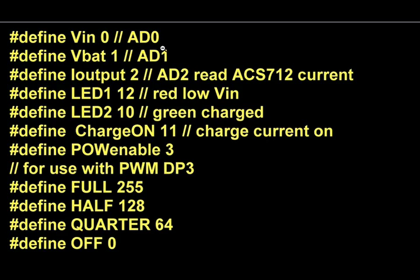VN is 0, that's analog to digital pin 0. VBAT is defined as 1, that goes to analog to digital 1. What I call Ioutput is defined as 2. That reads on analog to digital converter 2, it will read the ACS712 current sensor, which I'll show you how that works a little bit later in the video.